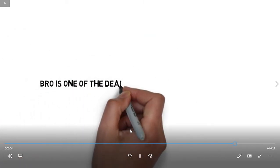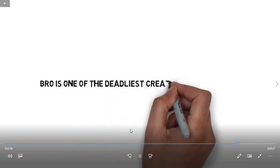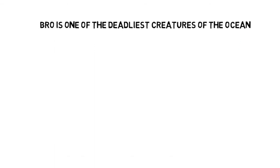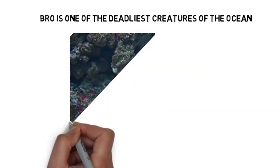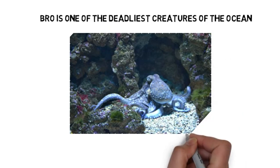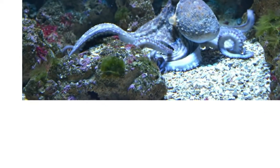Next is blue ringed octopus is one of the deadliest creatures on earth. Now this animal might be small, but it sure is deadly. And it can kill you really quick, in about half an hour.